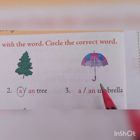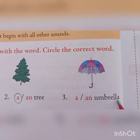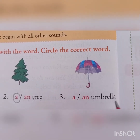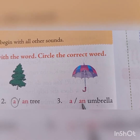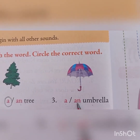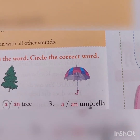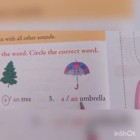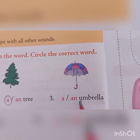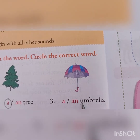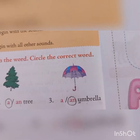Next: umbrella. Before umbrella, we use A or AN? U is the starting letter. U is a vowel, so we use 'an.' An umbrella.